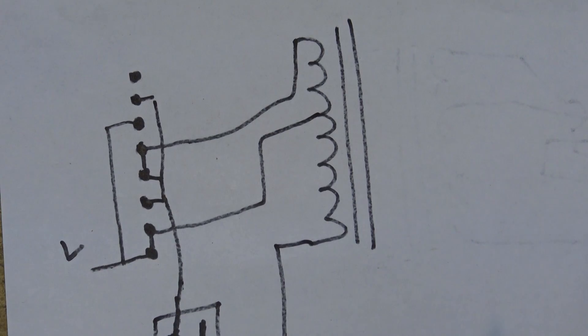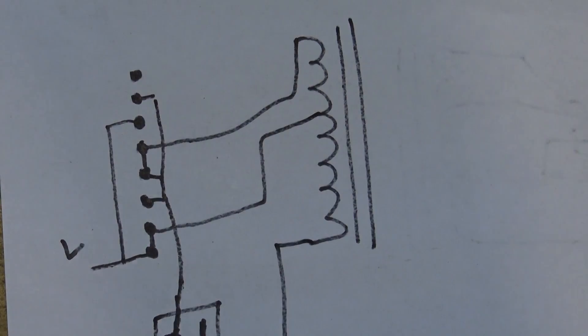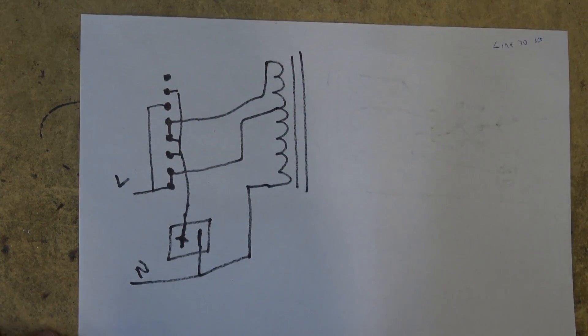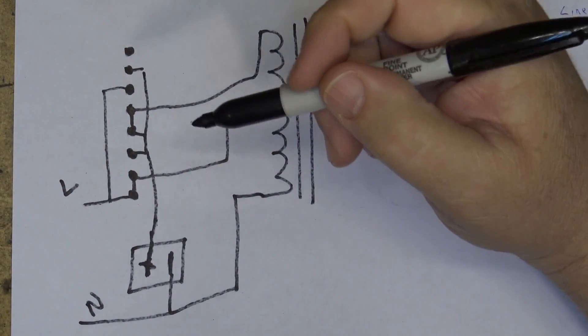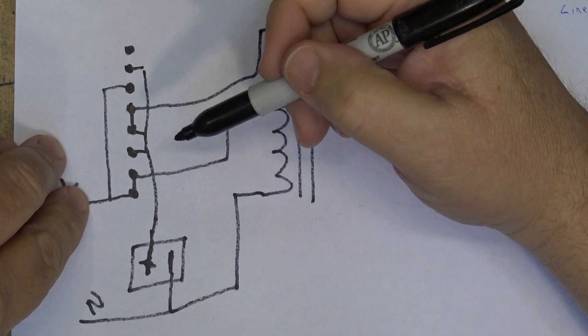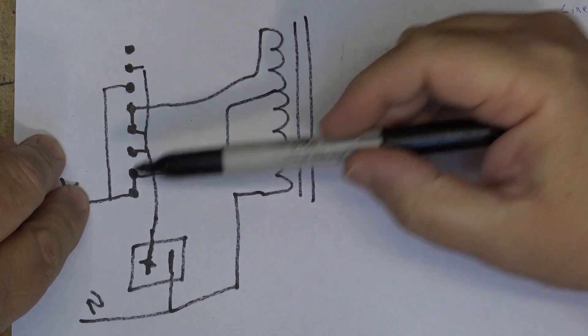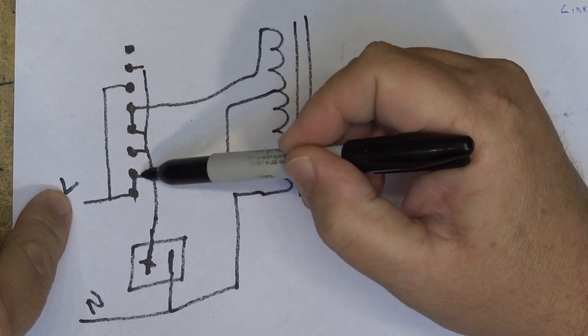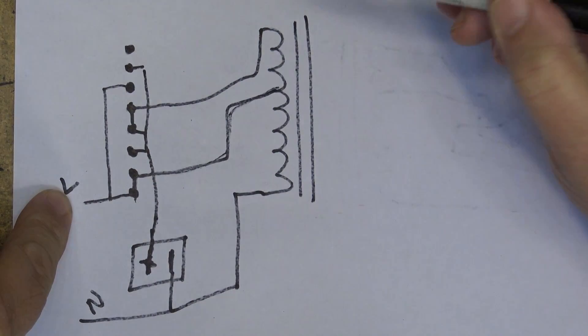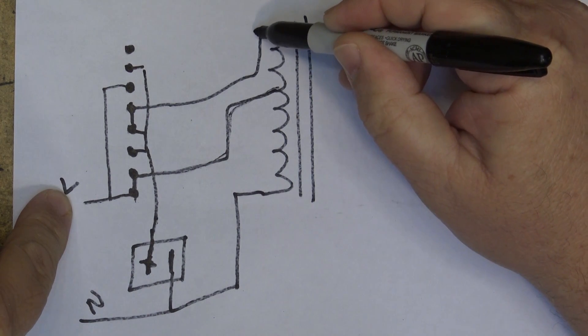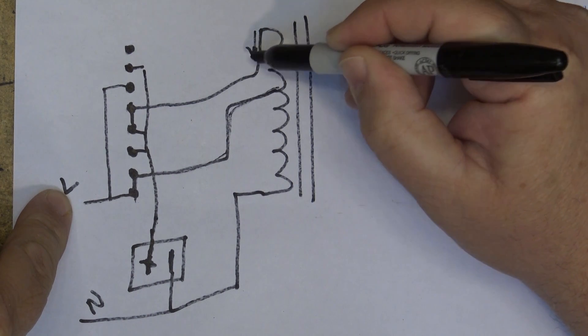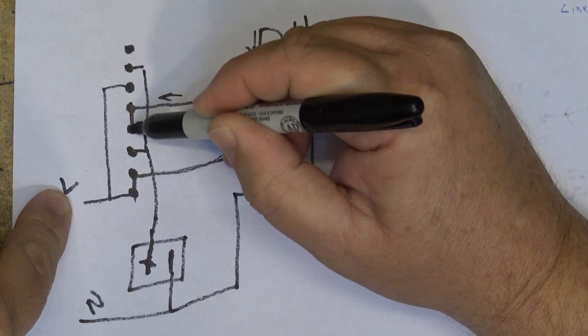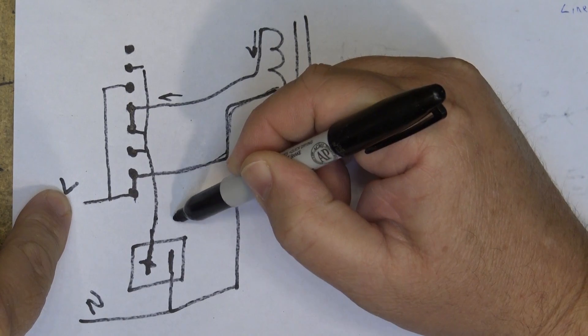Depending on what position the switch is in, if you're in the boost position you will be sending power from the line in. It's going to go up this direction here into the center tap of the transformer. It is going to come back out this direction into the switch which is now closed on this side, which is going to give you your boost.